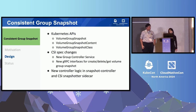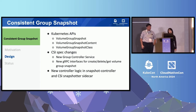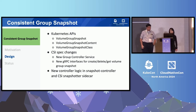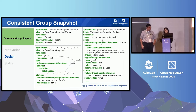We introduced new Kubernetes APIs that allow us to create a snapshot of multiple volumes that belong to the same application at the same point in time to ensure write-order consistency. We have new control logic in the snapshot controller that manages the lifecycle of volume group snapshots. We also have CSI spec changes — a new group controller service and new gRPC interfaces to create, delete, and get volume group snapshots.